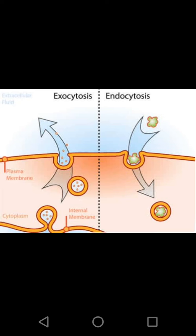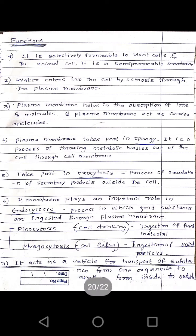The process by which food substances are ingested through the plasma membrane is called endocytosis. In endocytosis, we see two processes: pinocytosis and phagocytosis.